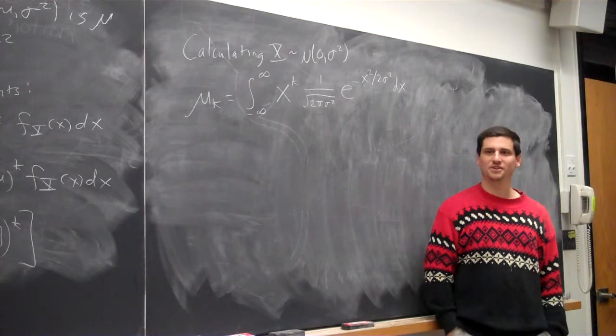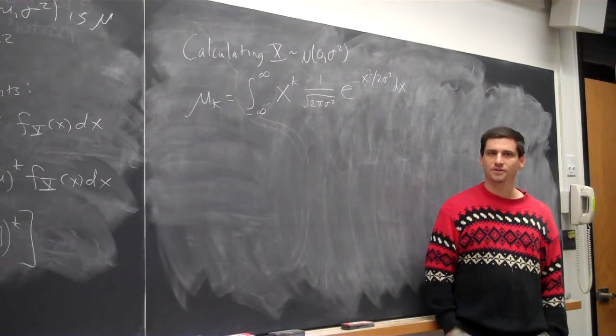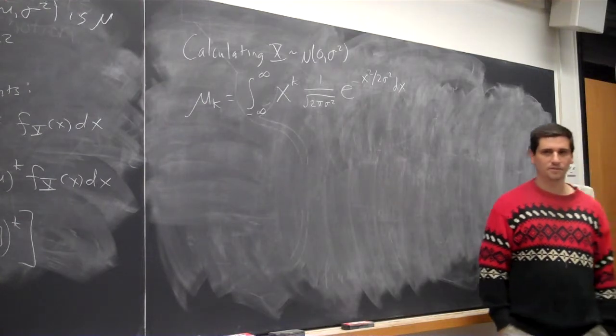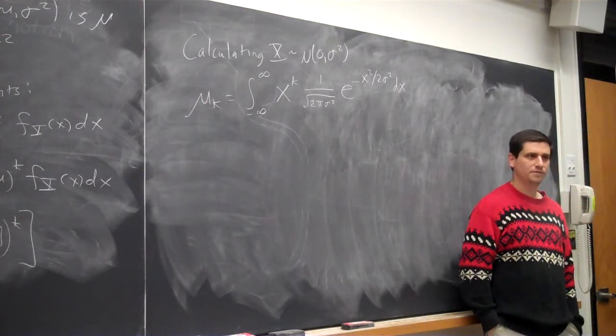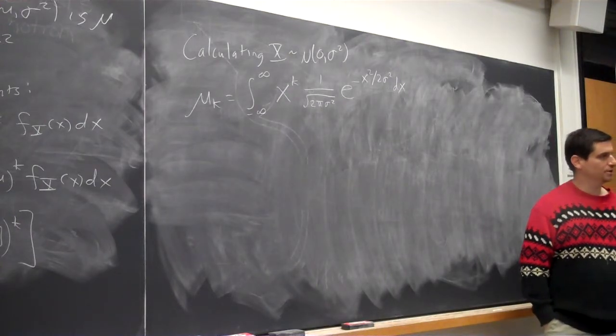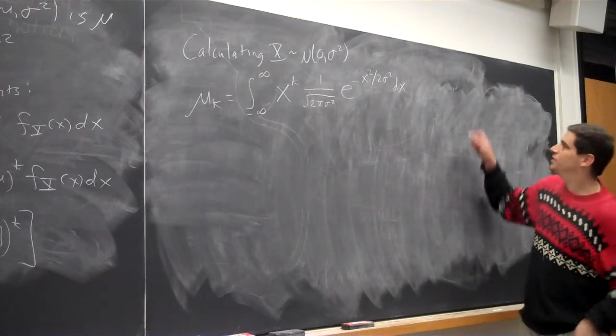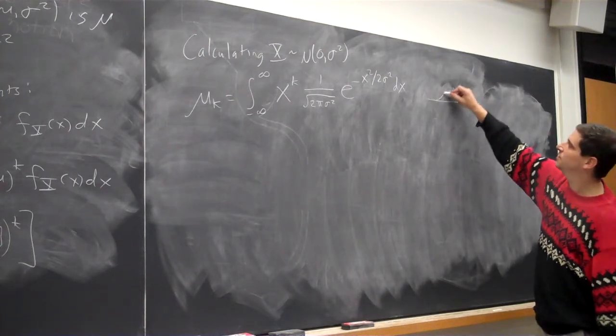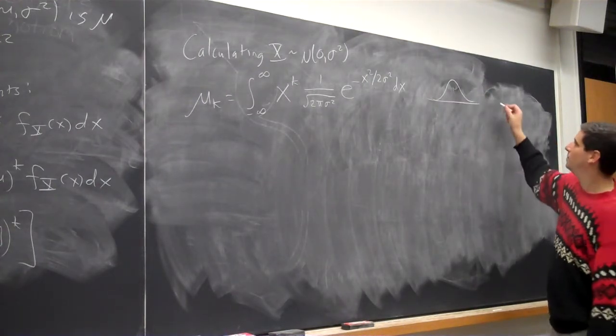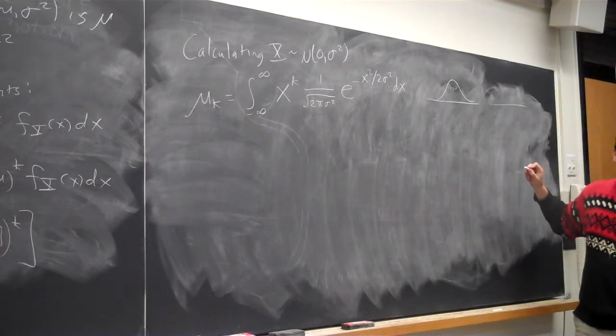One. Why can we do one easily? Because we can use the substitution. We can, but there's an easier way to do k equals one. So you're integrating x e to the minus x squared over 2 sigma squared. So if you think of what the normal distribution looks like, you have a nice even function. When I multiply by x, what do I get? Odd. I get odd.